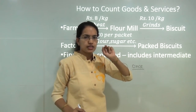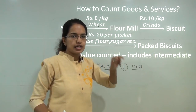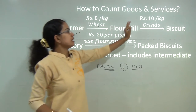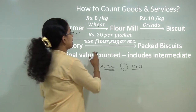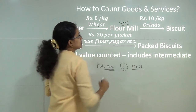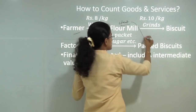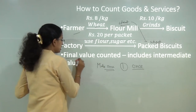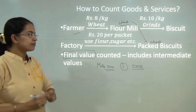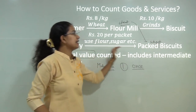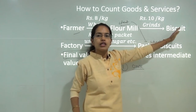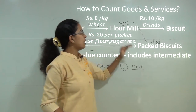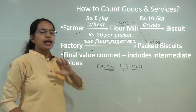This packed biscuit would have the ingredient of wheat, the biscuit factory would again have wheat as ingredient, the flour mill would again have wheat as ingredient, and the farmer is definitely supplying wheat. So this wheat is added at all 4 steps. If we take the value of wheat at each stage, that won't be the correct way, because this wheat is again an ingredient at the next stage. Therefore, whenever we are counting goods and services, we go for the final value — the packed biscuit — which automatically includes all the intermediate stages. So we go for the final product and not the intermediate product.